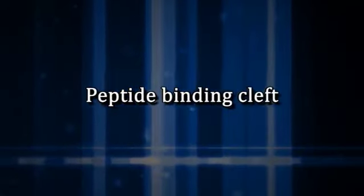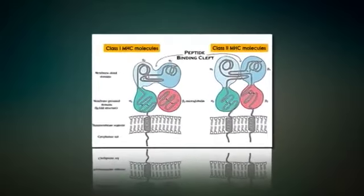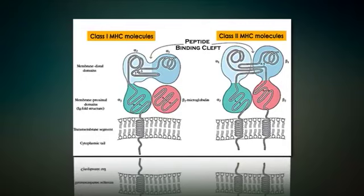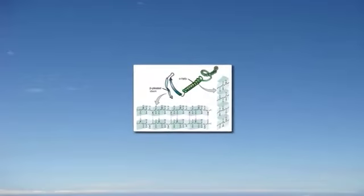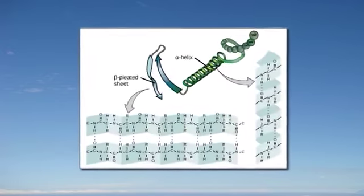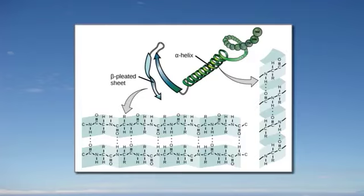The peptide binding cleft: The classical MHC class 1 and class 2 molecules contain a peptide-binding site at the distal end of the molecule from the membrane. This peptide-binding site is formed by two protein alpha helices lying on top of a beta-pleated sheet. The binding site, or groove, can accommodate a peptide of about 9 to 10 amino acids in length, although for class 2 MHC molecules the ends of the groove are open, allowing longer peptides to extend out of either end. A wide variety of different peptides can be bound tightly by interaction with the conserved residues in the MHC molecules and the amino acid backbone of the antigen peptide.